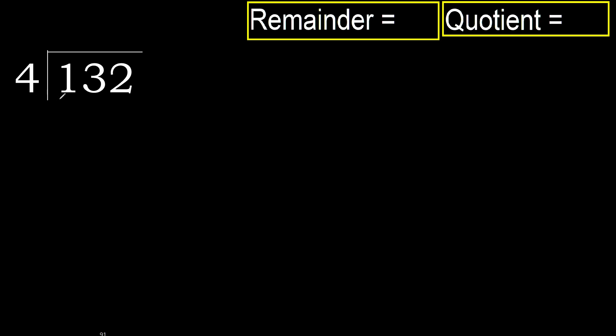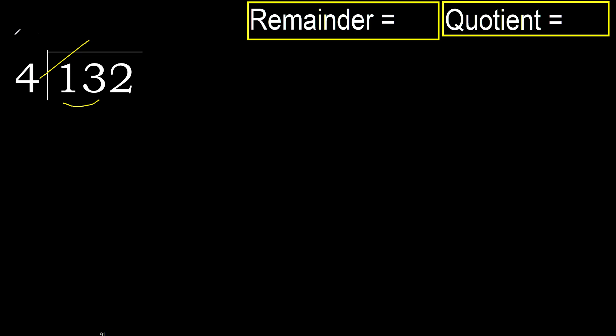132 divided by 4. 1 is less, therefore next. 13 is not less, therefore with 13: 4 multiplied by which number is nearest to 13, but not greater.